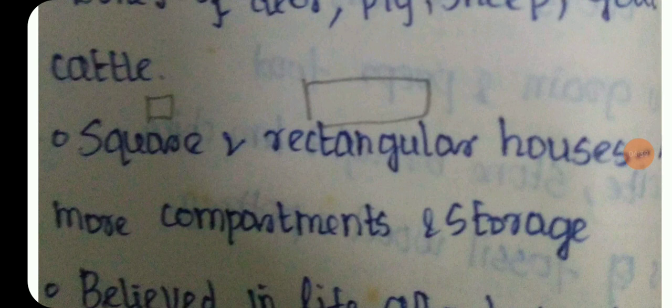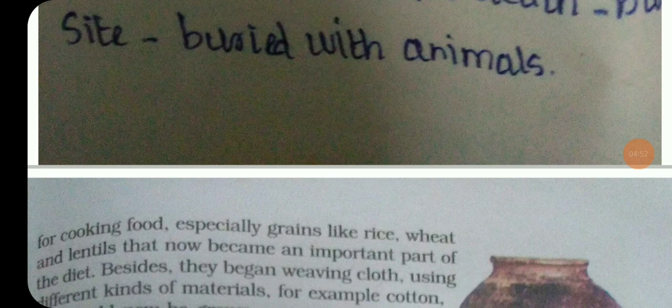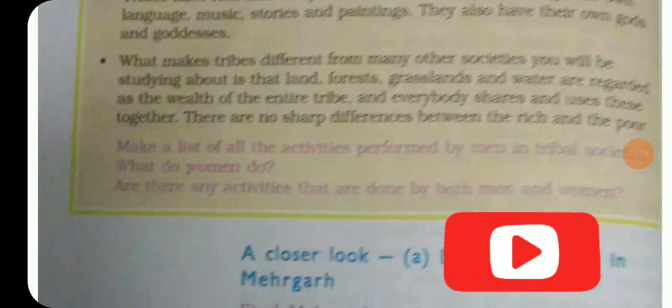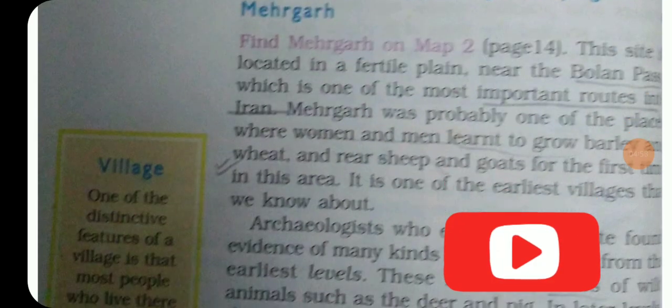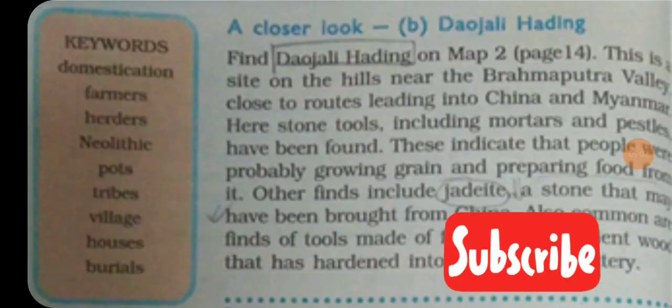There is a square and rectangular house. You can see the animals and the evidence. In the next video we will see the 4th chapter.